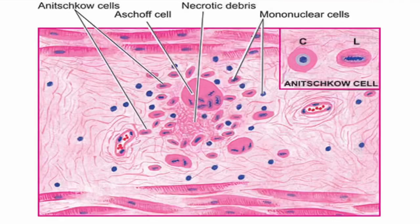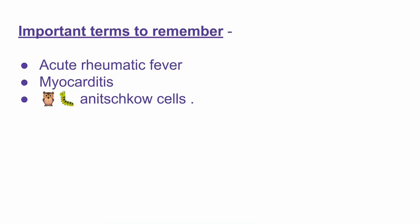Looking at the picture once more, we can find the necrotic debris, lymphocytes, macrophages, collagen fibers, and Anitschkow cells. The important terms to remember: Aschoff nodules are seen in acute rheumatic fever, specifically in myocarditis — that is, myocardial inflammation — and Anitschkow cells are the characteristic feature of Aschoff nodules.